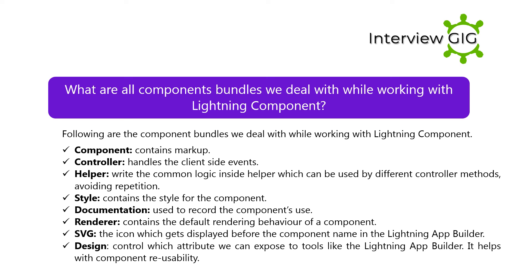What are all the component bundles we deal with while working with a Lightning Component? Component, which contains markup. Controller, which handles client-side events. Helper, where you write common logic that can be used by different controller methods, avoiding repetition. Style, which contains the style for the component. Documentation, used to record the component's use. Renderer, which contains the default rendering behavior of a component. SVG, the icon displayed before the component name in the Lightning App Builder. Design, which controls which attributes are exposed to tools like the Lightning App Builder, helping with component reusability.